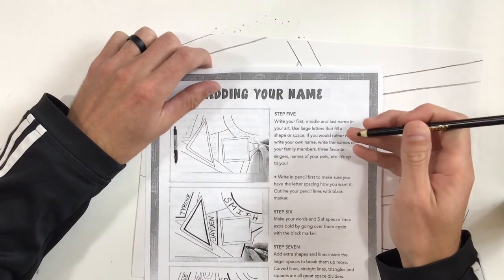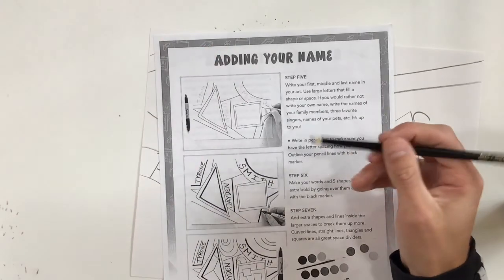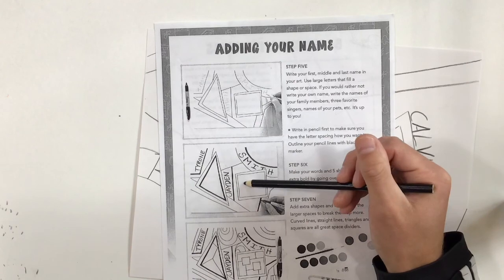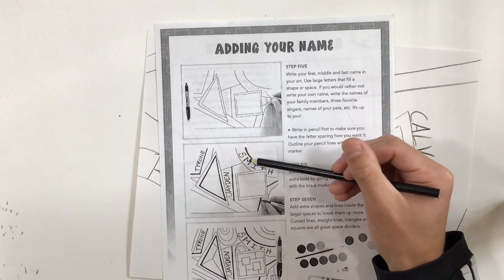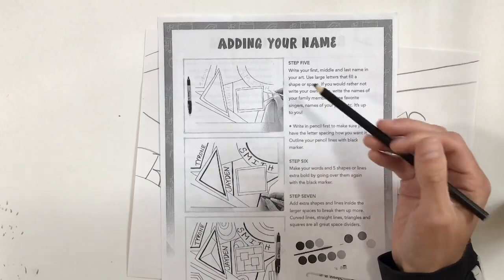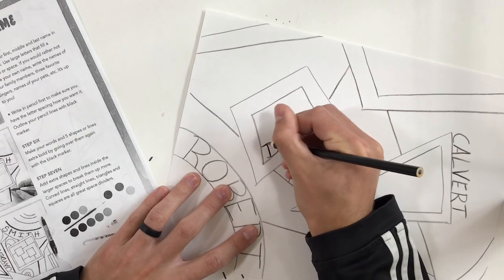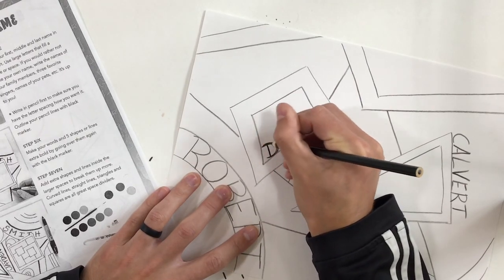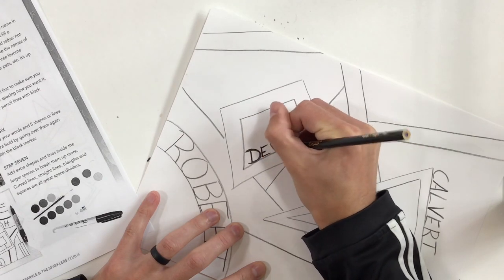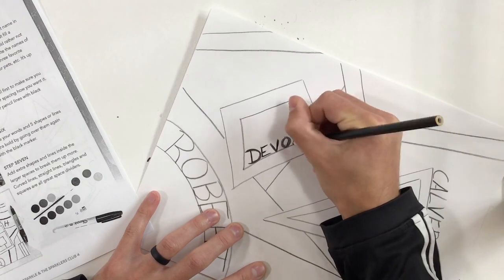Step six, make your words in five shapes or lines extra bold. So if you make something bold, it means you go over it a couple times so it gets darker. So when I look at this one versus this one, notice how the words are really dark. Some of these lines are really dark. So it said start with my name. So that means I'm going to kind of trace over that a couple times. So it gets darker, kind of adds a little bit of emphasis to some of the words and shapes. It also adds variety. So it's not all exactly the same.